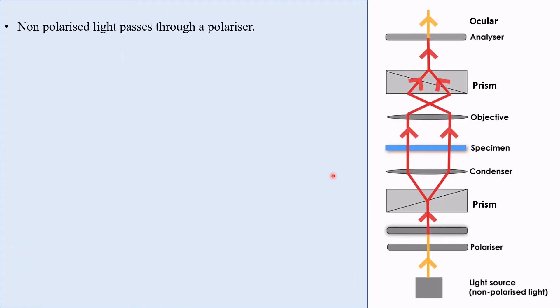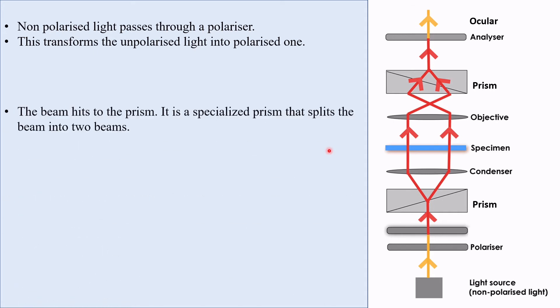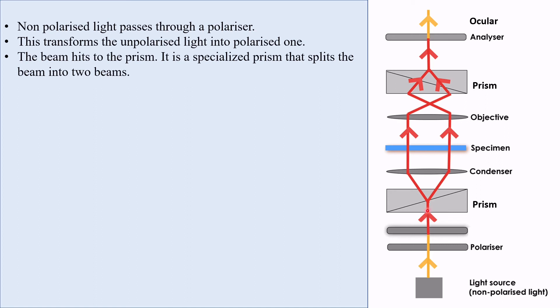The process begins with non-polarized light passes through a polarizer placed between the light source and the condenser. This transforms the unpolarized light into polarized one. The beam hits the prism. It is a specialized prism that splits the beam into two beams.